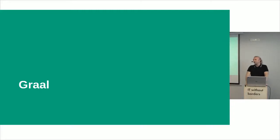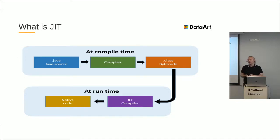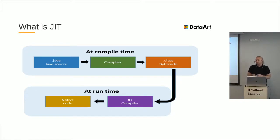Today I would like to talk about the just-in-time compiler named Graal. First, I want to give a brief review of what a JIT compiler is and why we need it. Java code is compiled into bytecode and then interpreted by the virtual machine. Interpretation is very slow, so to run it faster, there is a JIT compiler that translates bytecode into machine code — assembly code close to the processor — allowing it to run much faster.